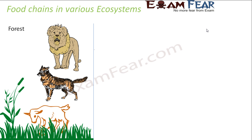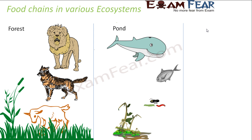Let us look at the forest ecosystem. Here we can consider a food chain where plants in the forests are eaten by goats, which in turn are eaten by jackals, and the jackals in turn are eaten by lions. This is an example of a food chain existing in a forest. Similarly, in a pond ecosystem — where you have water, fishes, insects, and aquatic plants — small plants inside the water are eaten by small insects, which in turn are eaten by small fishes, and the small fishes in turn are eaten by bigger fish. This is a food chain existing in a pond.